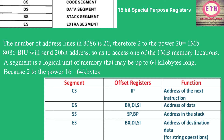The Stack Segment (SS) uses offset registers SP (Stack Pointer) and BP (Base Pointer), which address locations in the stack. In the Extra Segment, BX, DI, and SI are used — BX is the base pointer, DI is the destination index pointer, and SI is the source index pointer. The SI register is used for string operations.